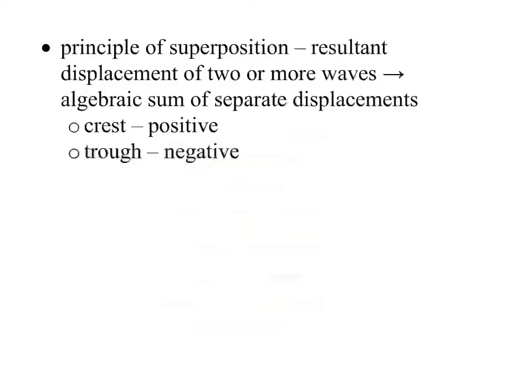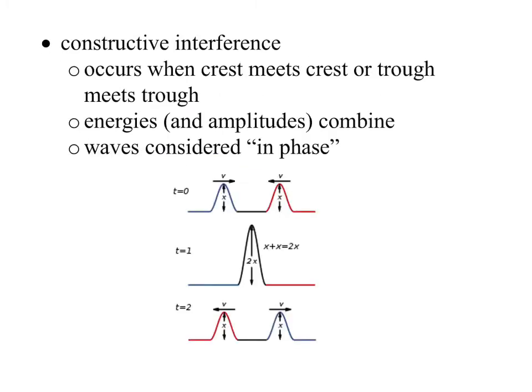So this is the principle of superposition: the resultant displacement of two or more waves will be the algebraic sum of their separate displacement. So basically if you have two crests meeting each other, the new crest created is just going to be the sum of both of those amplitudes of those waves. And of course, if you have crest meeting a trough, then it could cancel it out. So that's the most important to know. Crest is positive, a trough is negative. And so of course, constructive interference is when two crests meet each other.